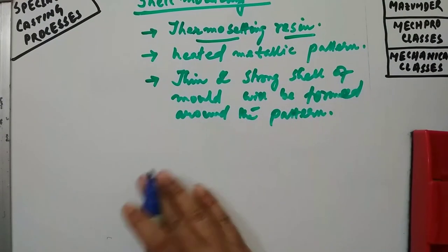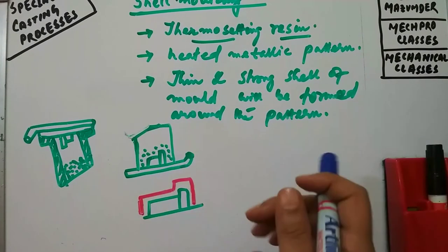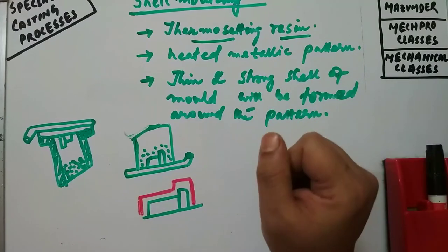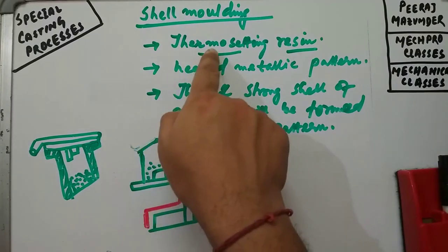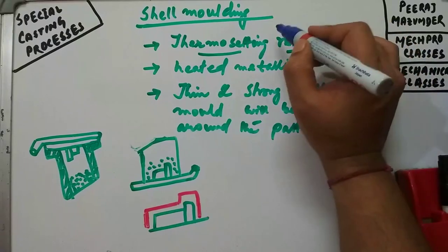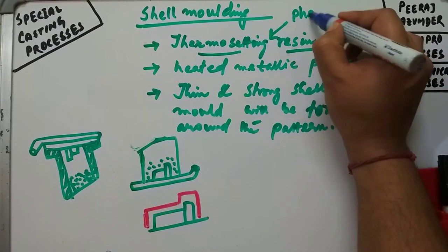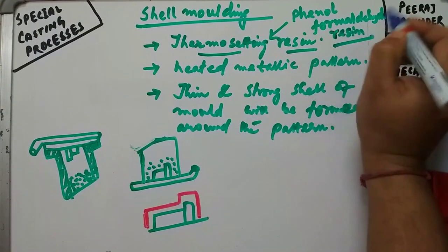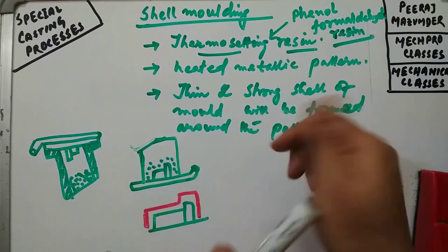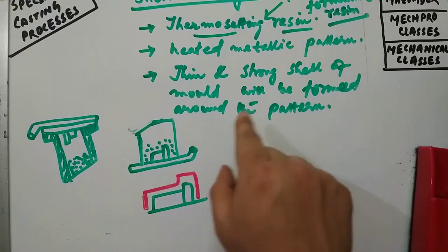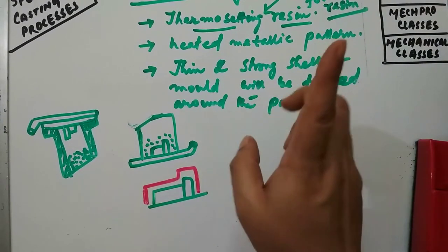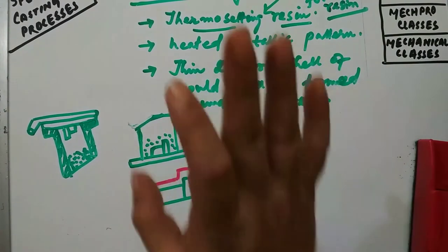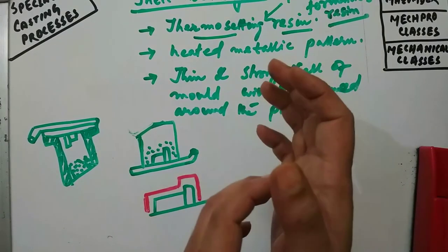In shell molding, the thermosetting resin widely used is known as phenol formaldehyde resin. The first step in preparing the shell mold is preparation of the sand mixture such that each of the sand grains is thoroughly coated with resin. Without thorough coating, you cannot have a proper shell.